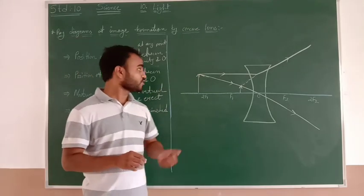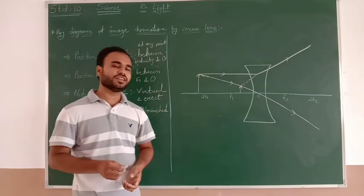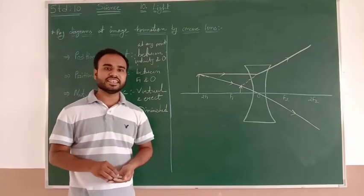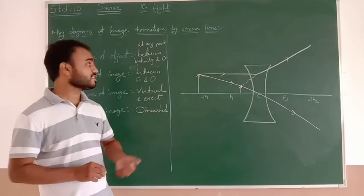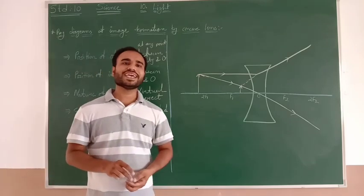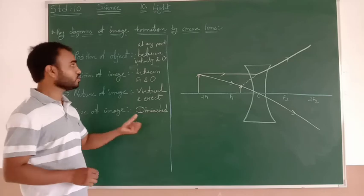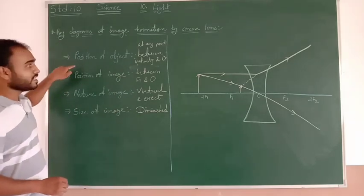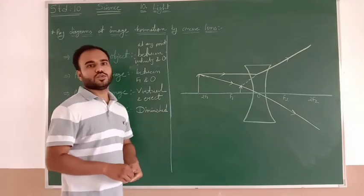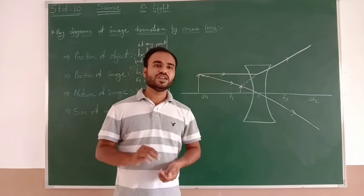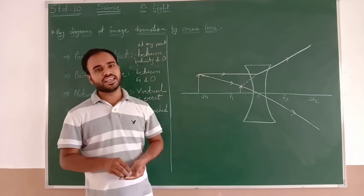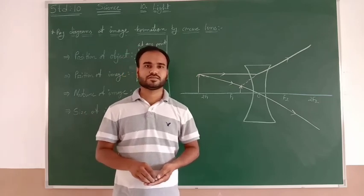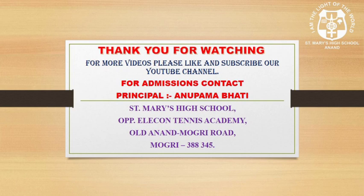I hope you all have understood the ray diagrams for convex and concave lenses, as we have done it on the board with figures, and have mentioned all four properties that are needed. The homework is: you have to draw all eight ray diagrams which I have drawn on the board, with all four needed details. We will meet soon in the next video. Till then, bye-bye, take care, God bless you. Thanks for watching the video.